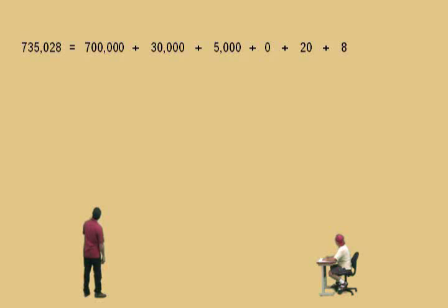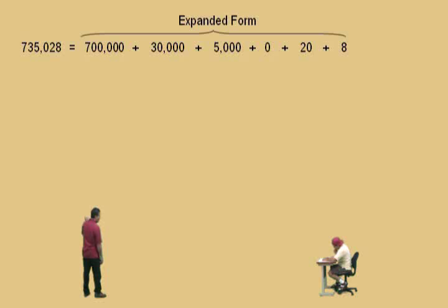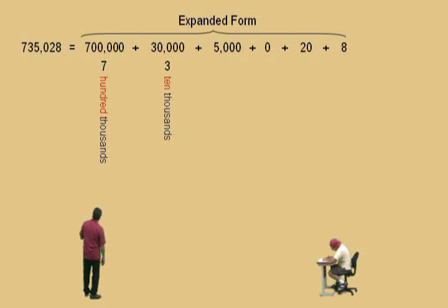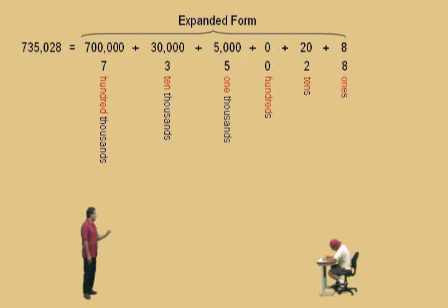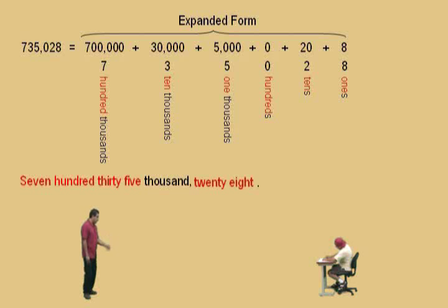Remember, this expanded form is a result of the fact that the seven was in the hundred-thousands, the three was in the ten-thousands, the five was in the one-thousands, there were zero one-hundreds but we've got to have a zero there, two tens and eight ones. And how do we say this number, Charlie? Seven hundred-thirty-five-thousand, twenty-eight. That's right — seven hundred-thirty-five-thousand, twenty-eight.